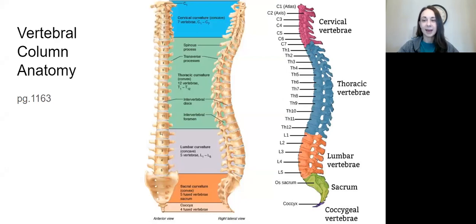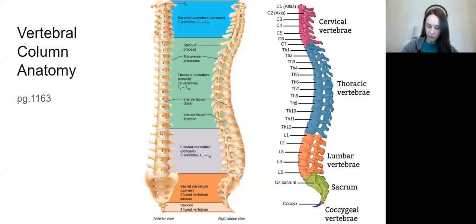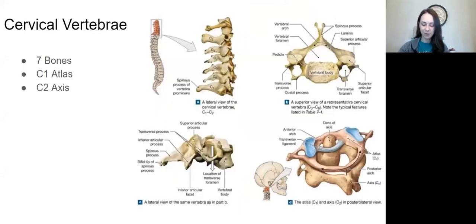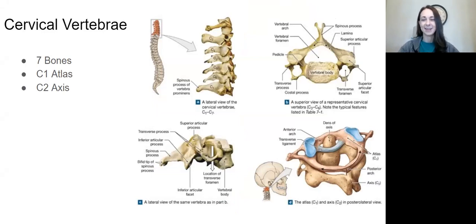I go straight into a big anatomy review. These are pictures so you can do your review on your own. Make sure you are reading everything on page 1163 about your vertebral column anatomy. You should know how many vertebrae we have and how many are in each section. Seven cervical vertebrae should already be memorized.